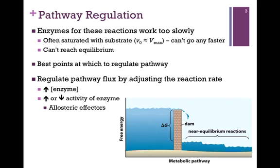Imagine that we have several small streams that feed into a waterway. Those small streams represent near-equilibrium reactions — there's not much water flow, and we could dam up all of those streams and not make much of an impact downstream. If instead we have a large river — representing a reaction with a large favorable change in delta g — damming that river will have a significant impact downstream. And if the enzyme catalyzing that reaction is working relatively slowly, we can influence its activity and speed it up, or slow it down more, to regulate the pathway flux or flow.